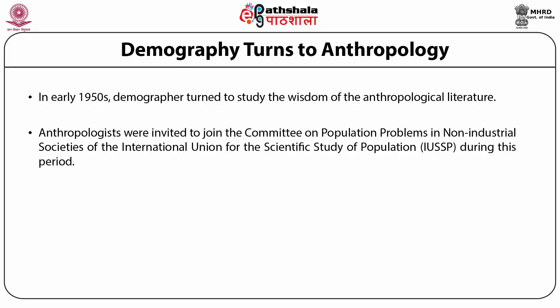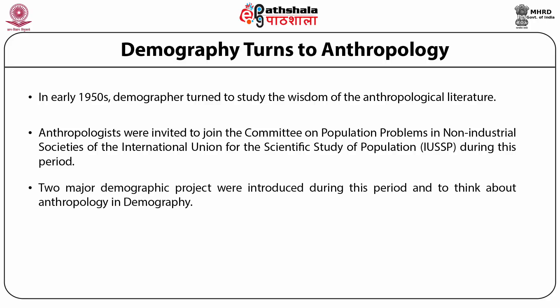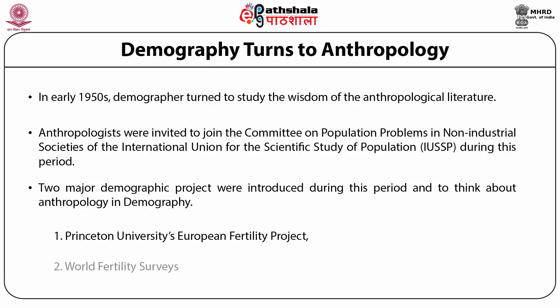Social anthropologists during the early decades of the 20th century made profound use of population data, focusing on kinship studies as one of the pillars of the social organization of population and reproduction. In the early 1950s, demographers turned to study the wisdom of the anthropological literature. A few anthropologists were invited to join the community on population problems in non-industrial societies. During the 1960s and 70s, two major demographic projects manifested the methodological and theoretical boundaries: the Princeton University European Fertility Project and the World Fertility Survey.